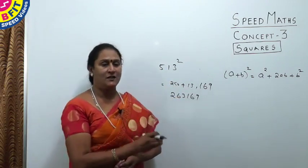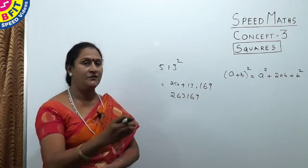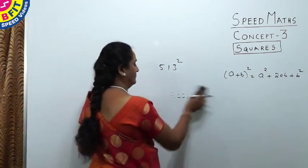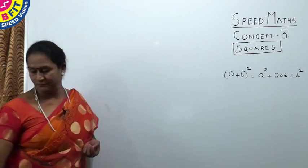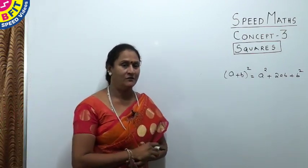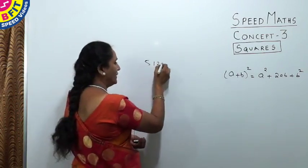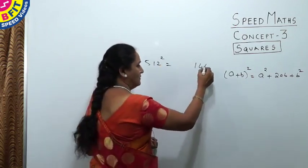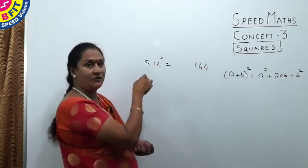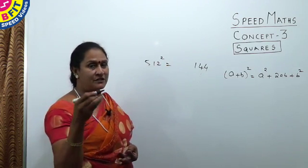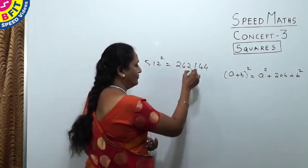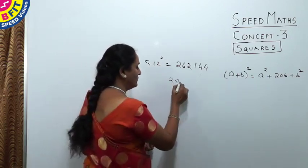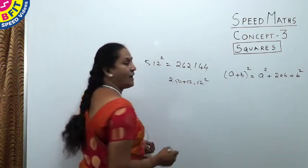For 512: write 12² = 144. Add 12 to 250: 250 + 12 = 262. So 512² = 262144. The pattern is: 250 + 12 for the leading part, and 12² for the trailing part.